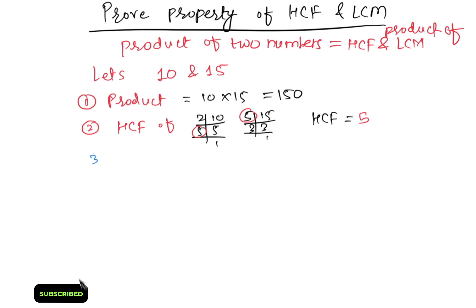And in the third one we'll find LCM of 10 and 15 by common division method. So LCM is 5 into 2 into 3 that is 30.